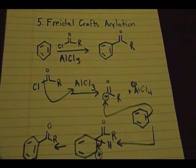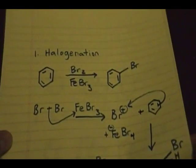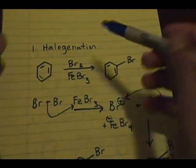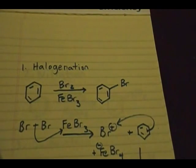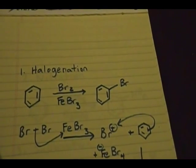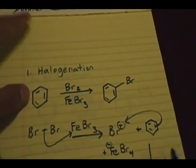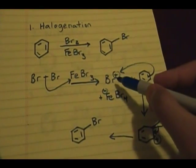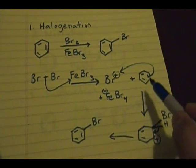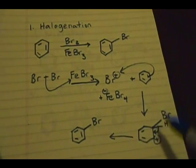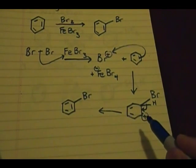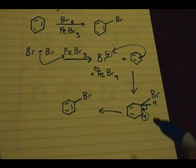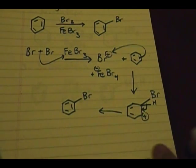The first reaction we talked about was halogenation. Halogenation starts with an aromatic ring, and the reagents are Br2 or Cl2 with FeBr3 or FeCl3, and you add a Br group. The mechanism: you form a positive Br, a pair of electrons from the aromatic ring attack the Br, you form an aromatic intermediate with a positive charge, then an elimination step reforms the aromatic ring with a Br attached.